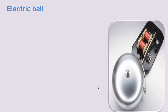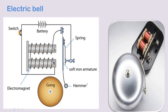Electric bell. The electric bell consists of an electromagnet inside the circuit — an iron rod with wires wound around it, behaving like a magnet when the circuit is on. There is also a battery, a hammer, and a gong. When the hammer hits the gong, we get the sound. The hammer is connected to a spring. When we switch on the circuit, current passes through the iron bar, which acts as an electromagnet and attracts the soft iron bar.